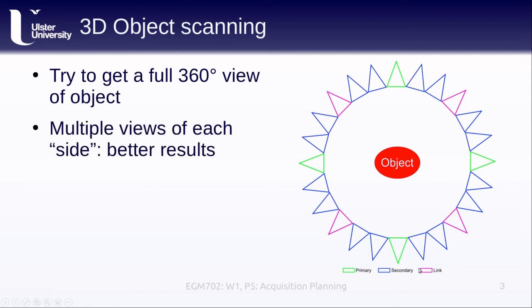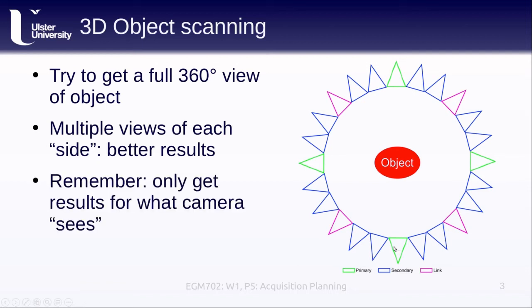If we get multiple views of each side of the object, recognizing that the object might not actually have sides, we end up getting better results. But remember, the only way that we can actually get results is that the camera can actually see it. If we have an object that has a lot of small nooks and crevices, we might need to change the setup in order to be able to see inside of those areas.